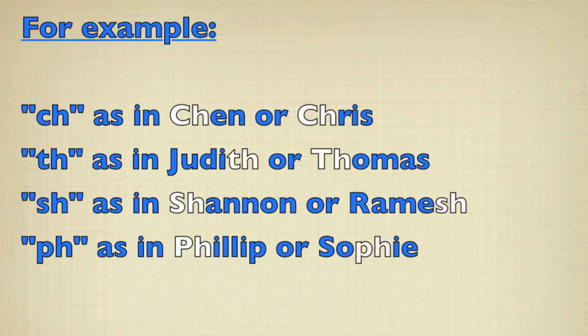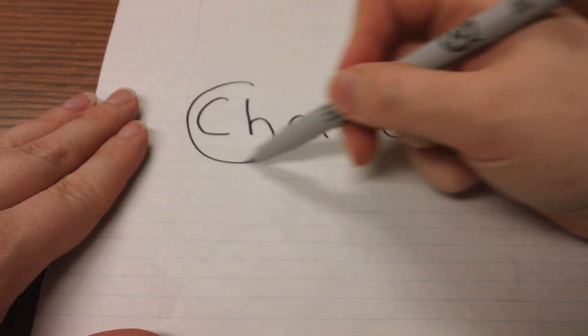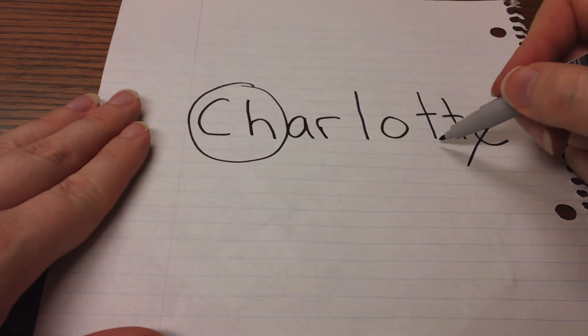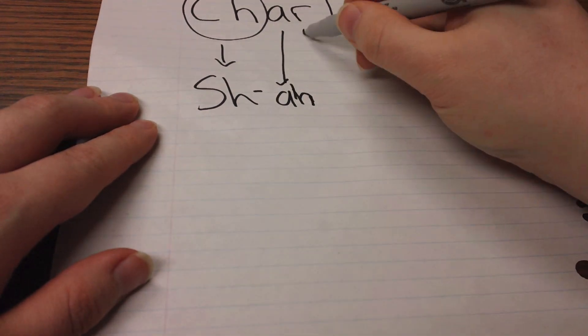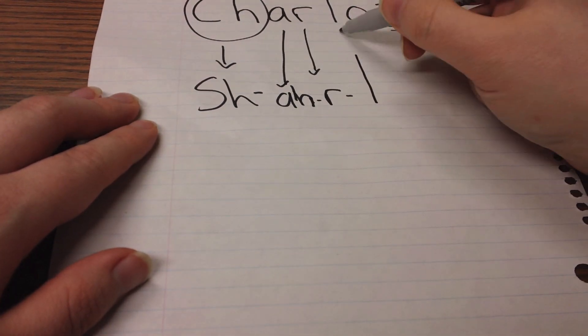Some hieroglyphs stand for two letters. Look for these letter combinations and circle them. Underline any double letters in your name that are only pronounced once. Write out your name again using the sounds in your name instead of the letters.